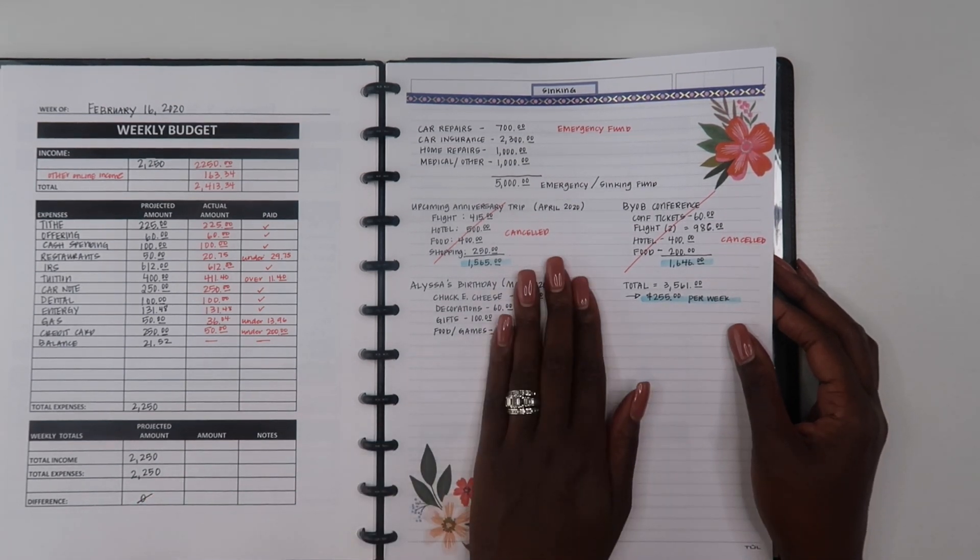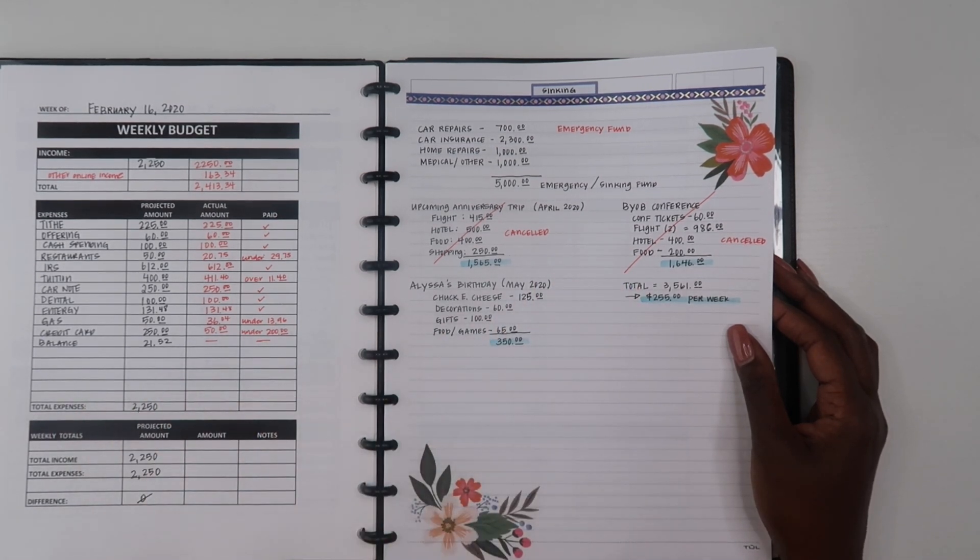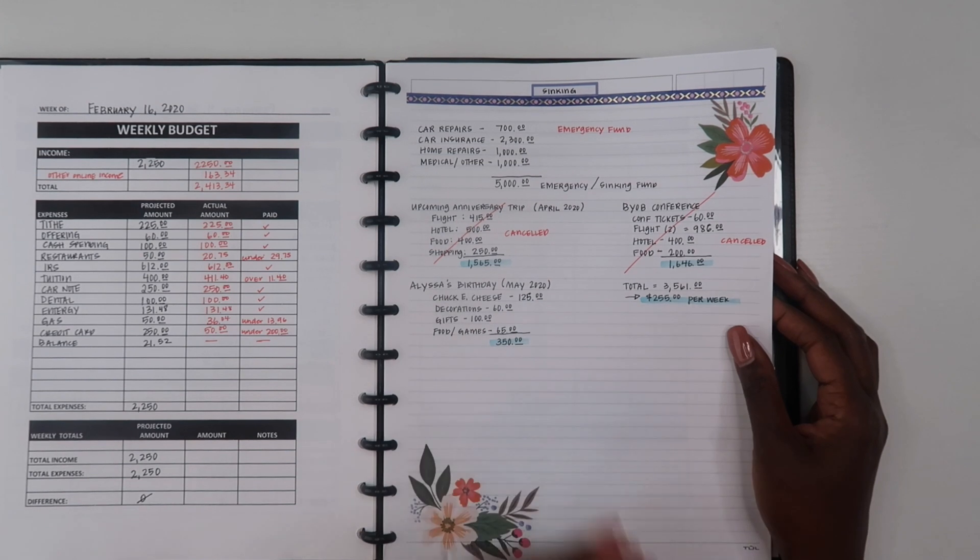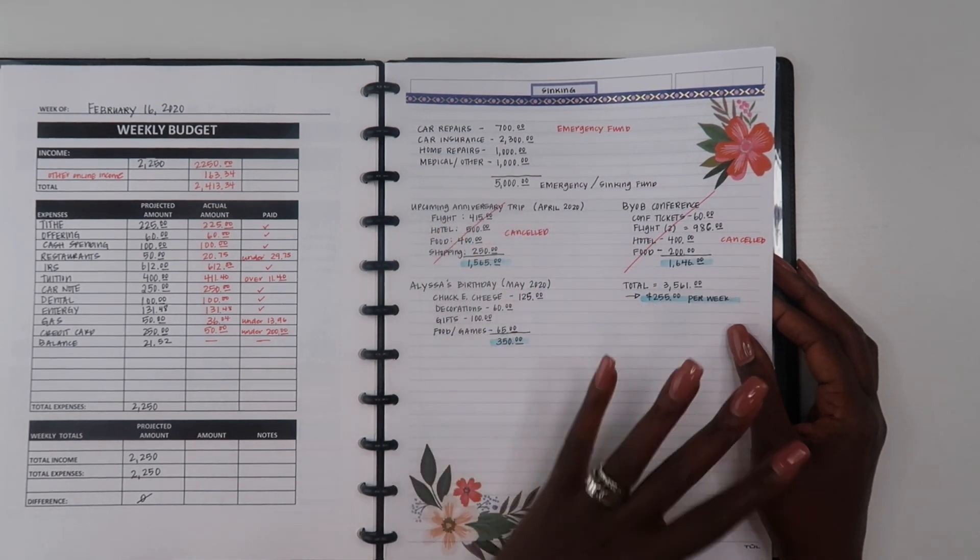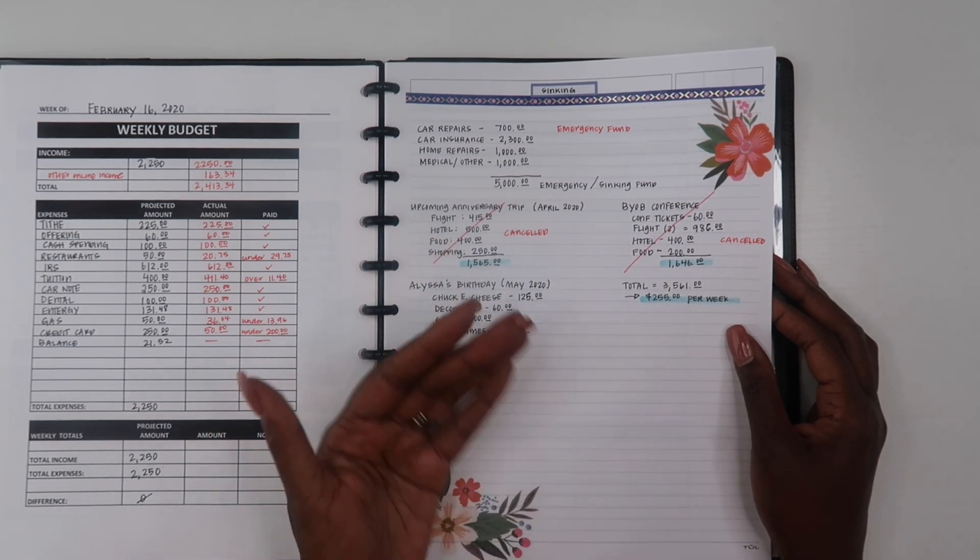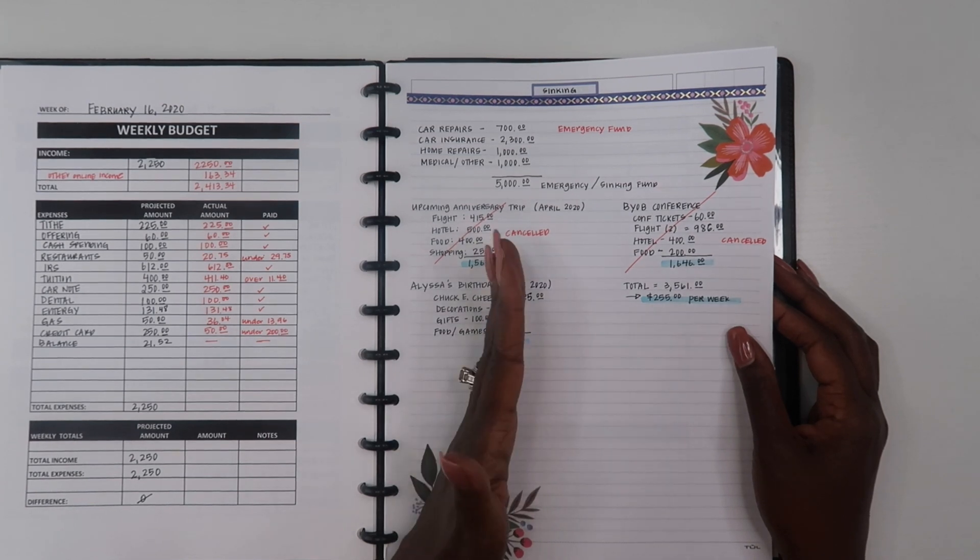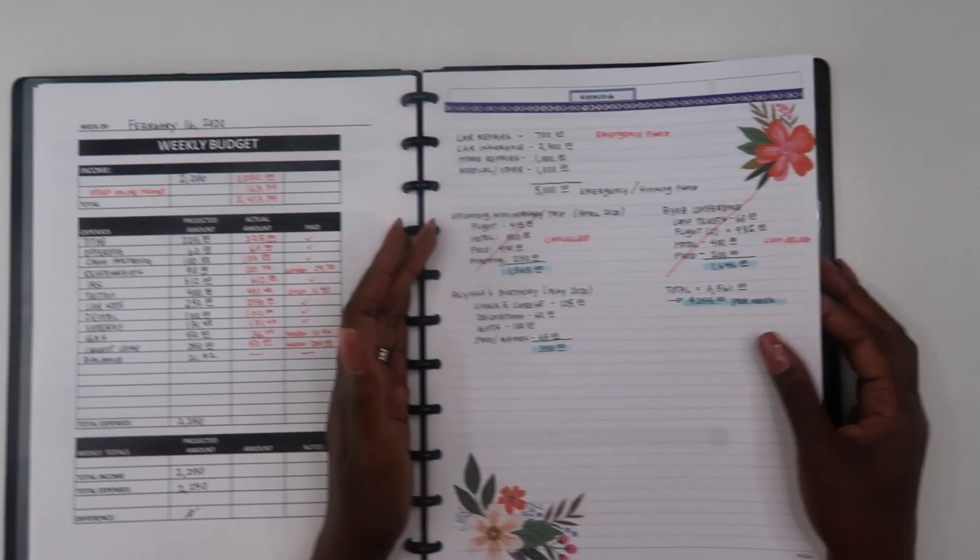Right now it's way more necessary to keep the money set aside for essentials because we are on variable income. Since we're on variable income and our income fluctuates from month to month, we need to be way more careful with our income. So I did cancel this trip also.